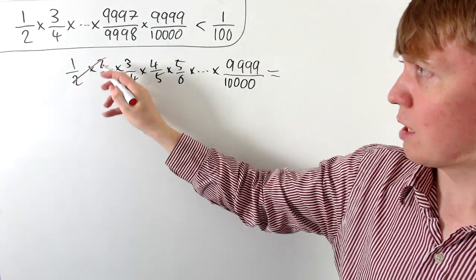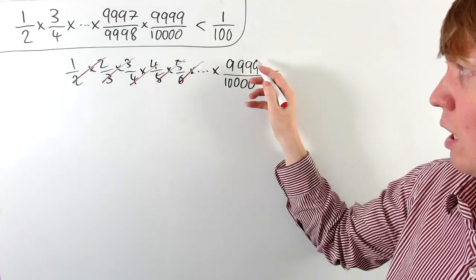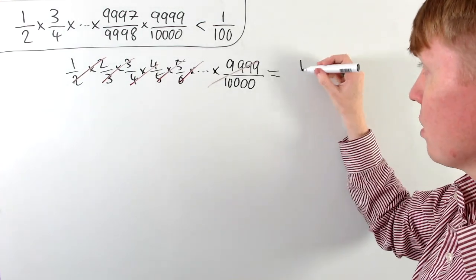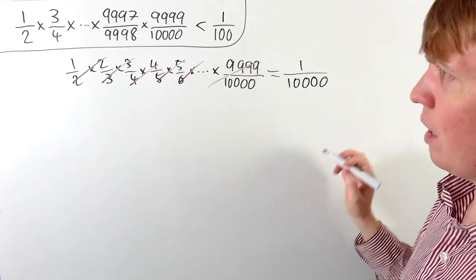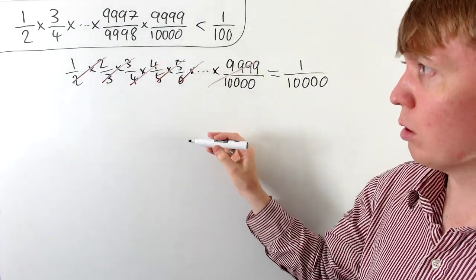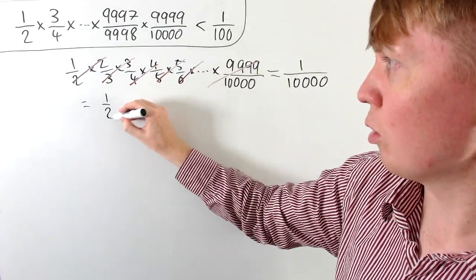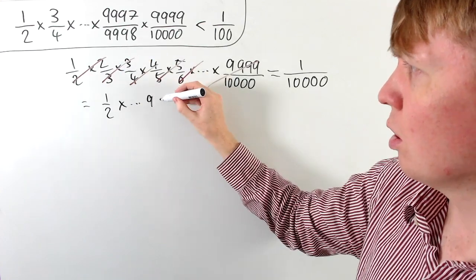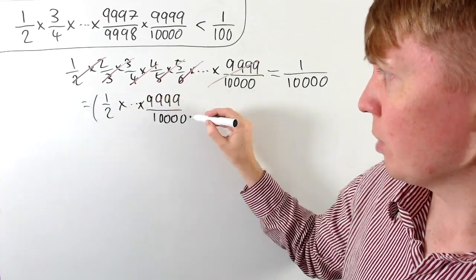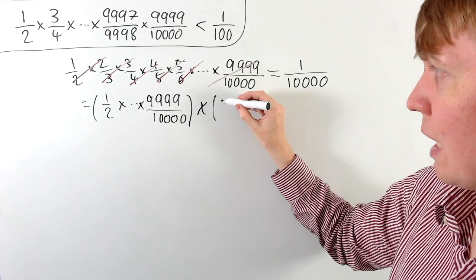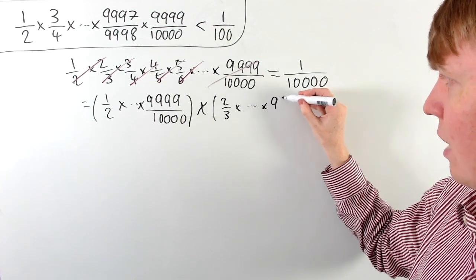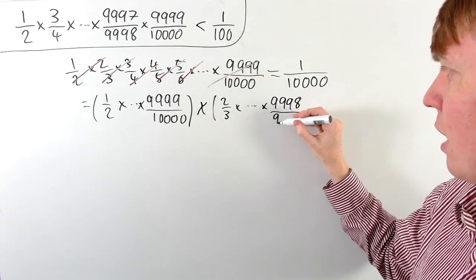You can see here there's lots of nice cancellation structure — this six would cancel with the next term, and even the 9,999 would cancel with the previous term. So all of this is just equal to 1 over 10,000. This helps us understand an upper bound for our original product, because we can think of this as our original product — one half times three quarters, all the ones where we've got an odd number over an even number — multiplied by all the new terms we've added in: two thirds times four over five, and so on, all the way up to 9,998 over 9,999.